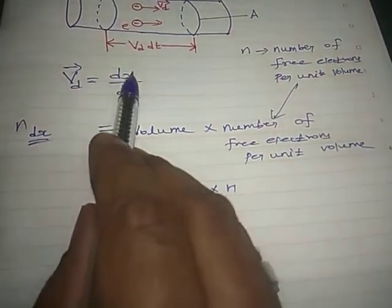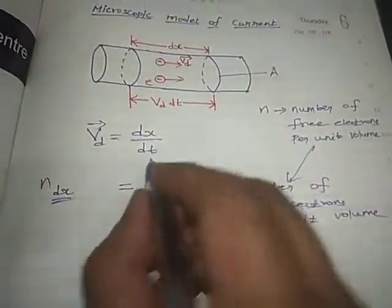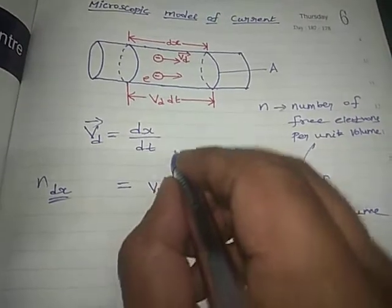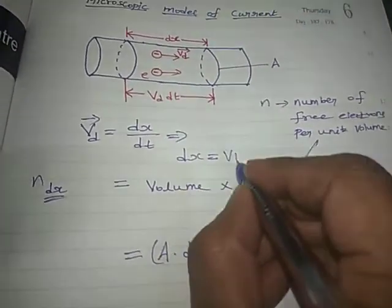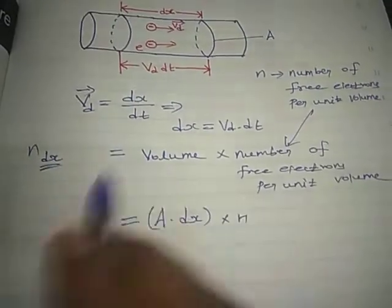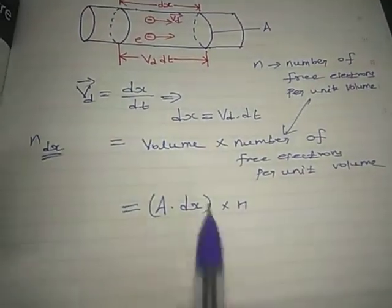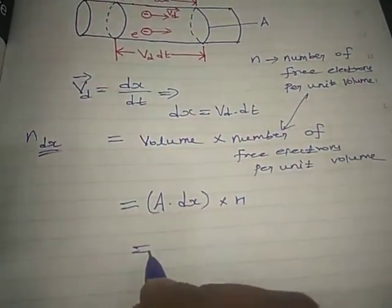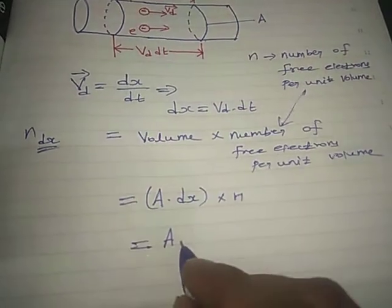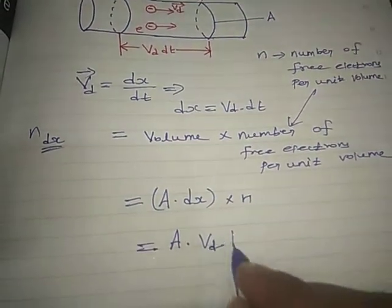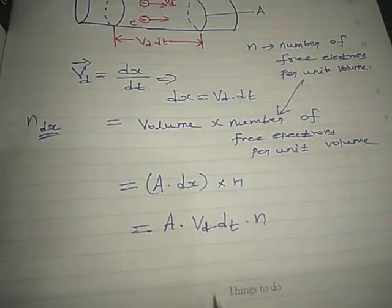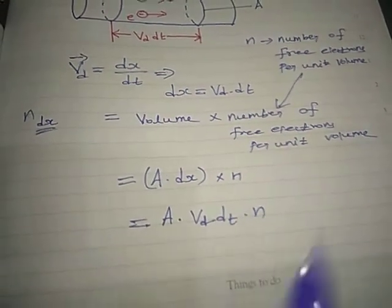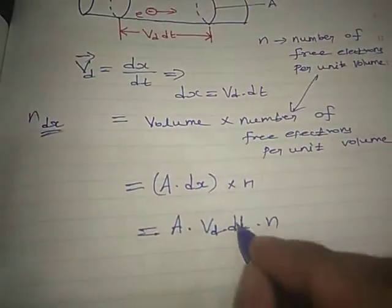Since vd = dx/dt, we get dx = vd × dt. Substituting this value of dx, the total number of free electrons in the volume becomes A × vd × dt × n.